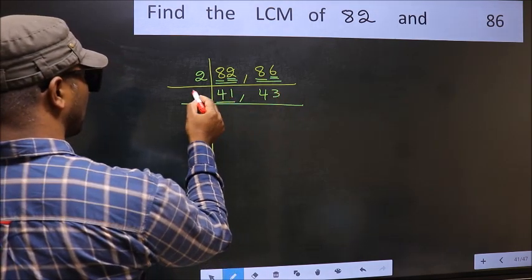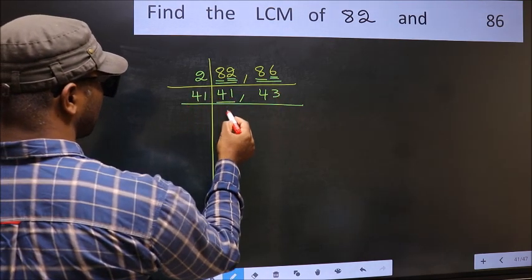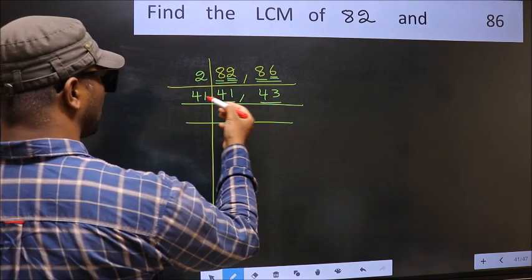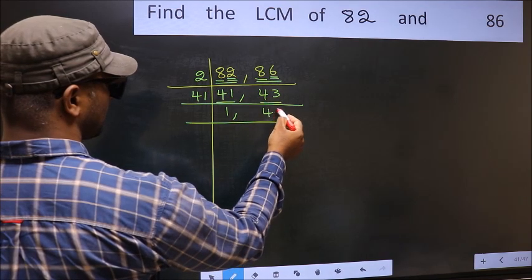Now, here we have 41. 41 is a prime number so 41 ones are 41. The other number 43 not divisible by 41 so you write it down as it is.